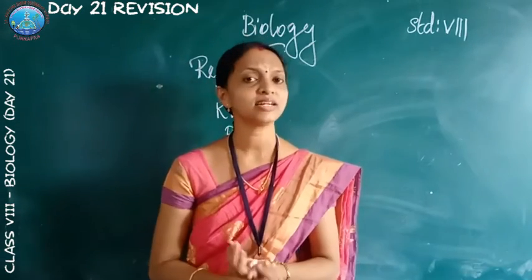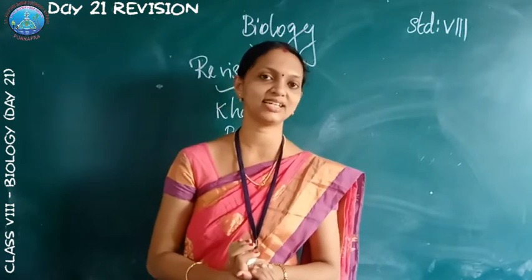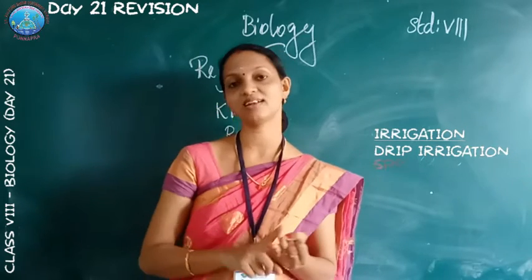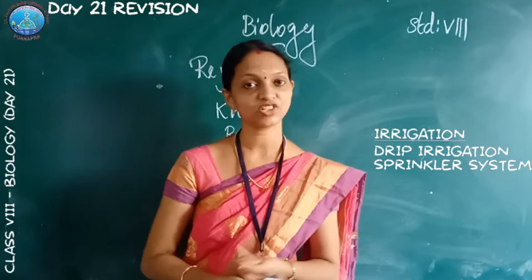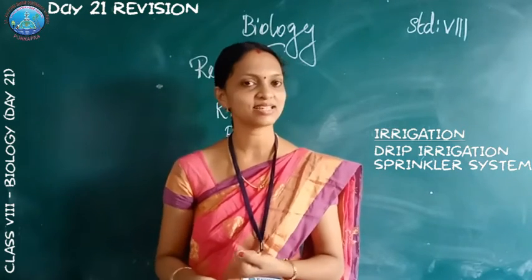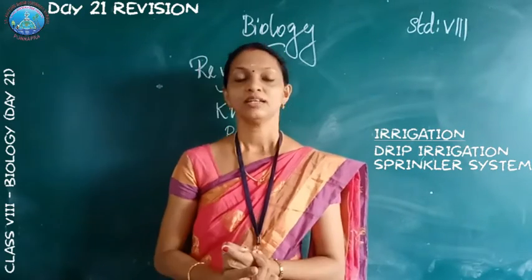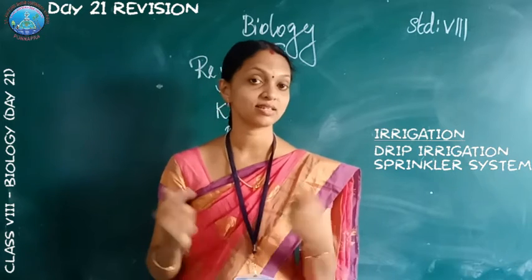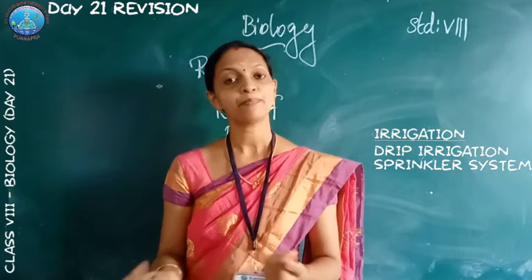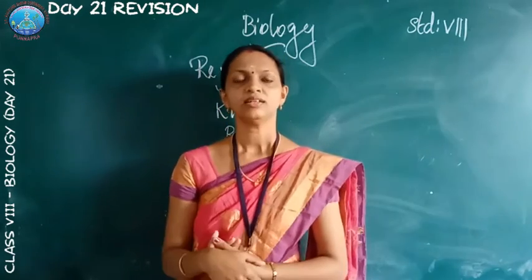Then we studied irrigation. What is irrigation? Watering of the plants is called irrigation. There are two types of irrigation: drip irrigation and sprinkler system. In drip irrigation, water is given to the plants drop by drop. In the sprinkler system, it is used in large areas and uneven land — water is sprinkled from the top like rain. Both drip irrigation and sprinkler system reduce the wastage of water.